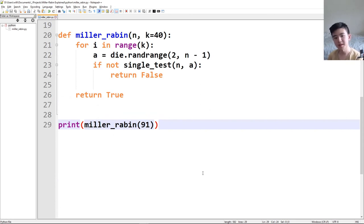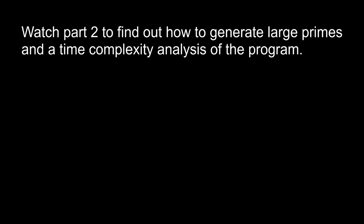I've decided to split this video into two parts because it's getting way too long. This first part covered the fundamentals of implementing the Miller-Rabin primality test. The second part will include how to generate a prime as well as the time complexity analysis of the program. You can watch part two by clicking the card, or I'll put the link in the description. Thanks!